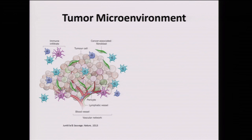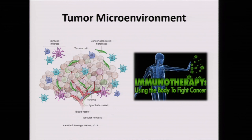We all know that the tumor is not just cancer cells with mutation and the endless need to replicate, but also a large component of supporting cells, such as blood vessels and cells from the immune system. In the last few years, this has been the focus of cancer research, probably because of the emergence of immunotherapies — the immune checkpoint blockades and other immunotherapies — which use this microenvironment to fight the tumor.